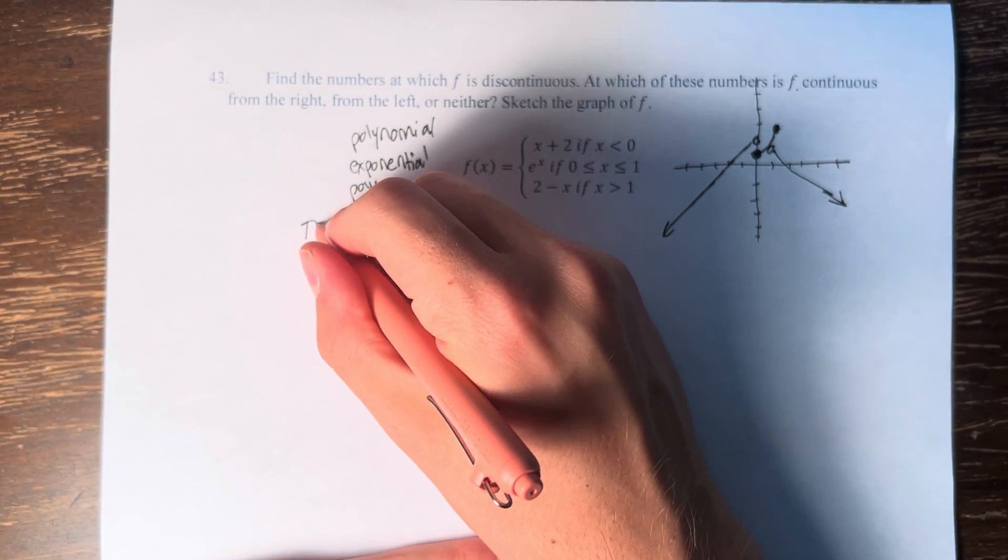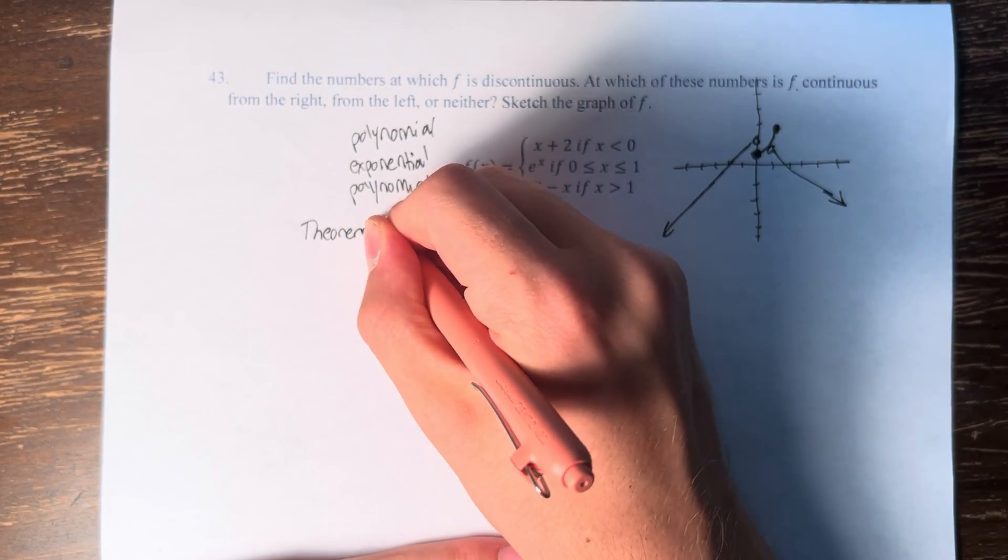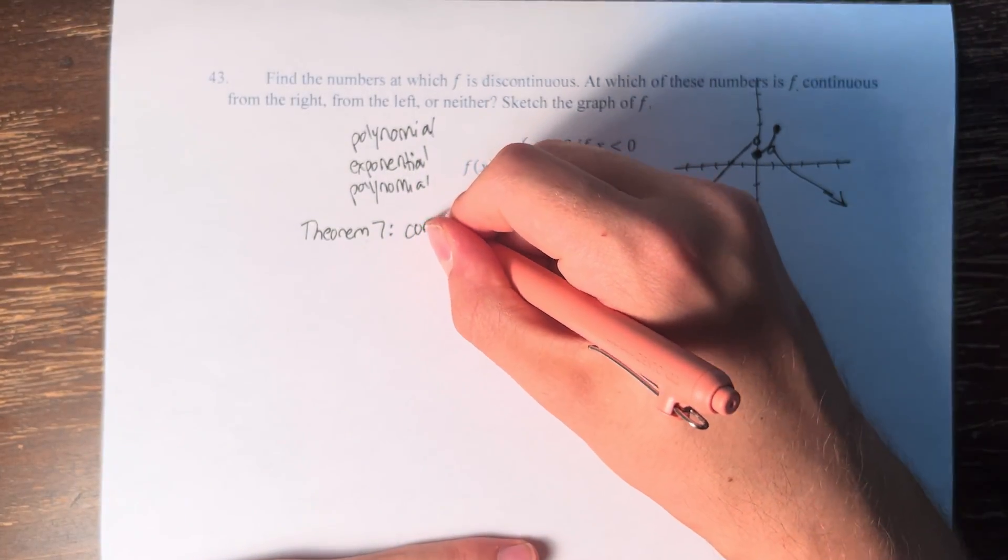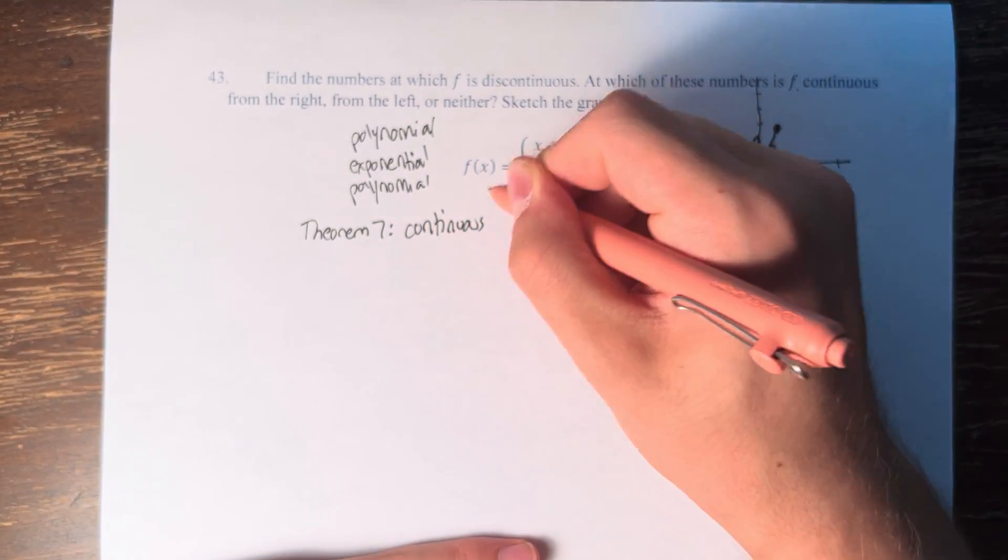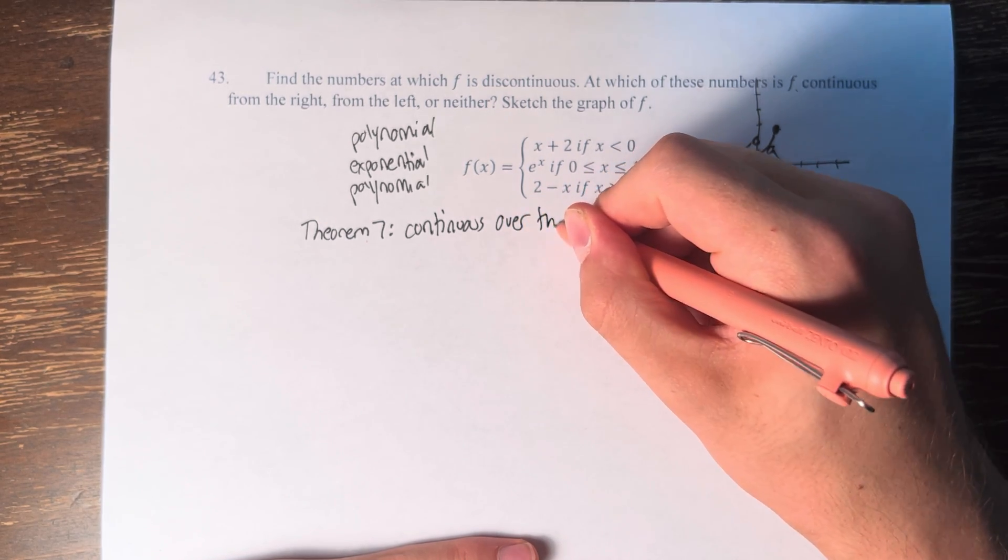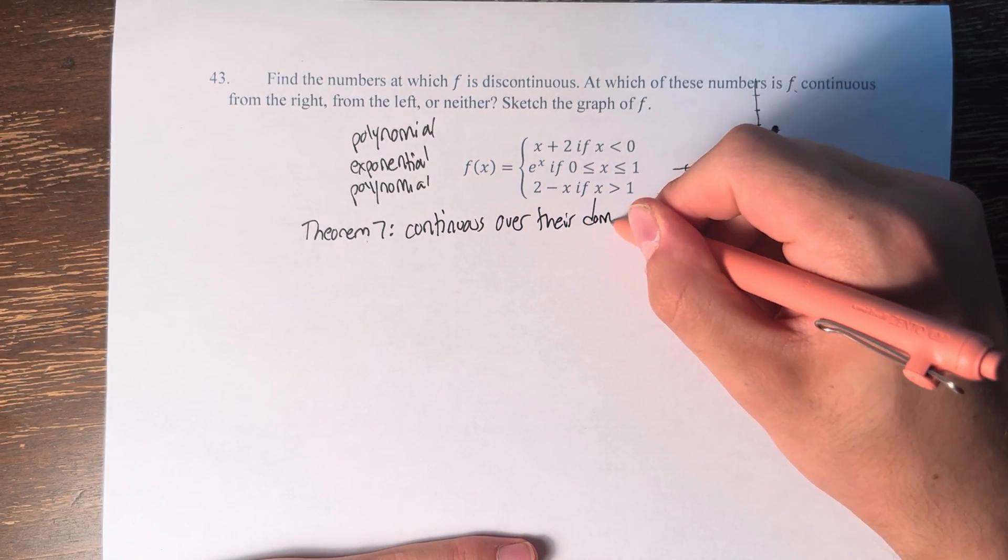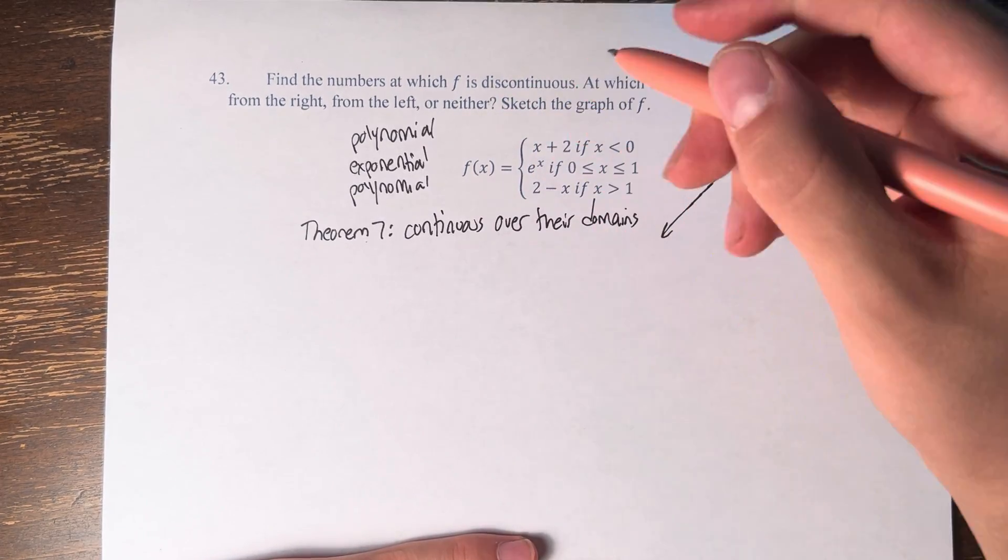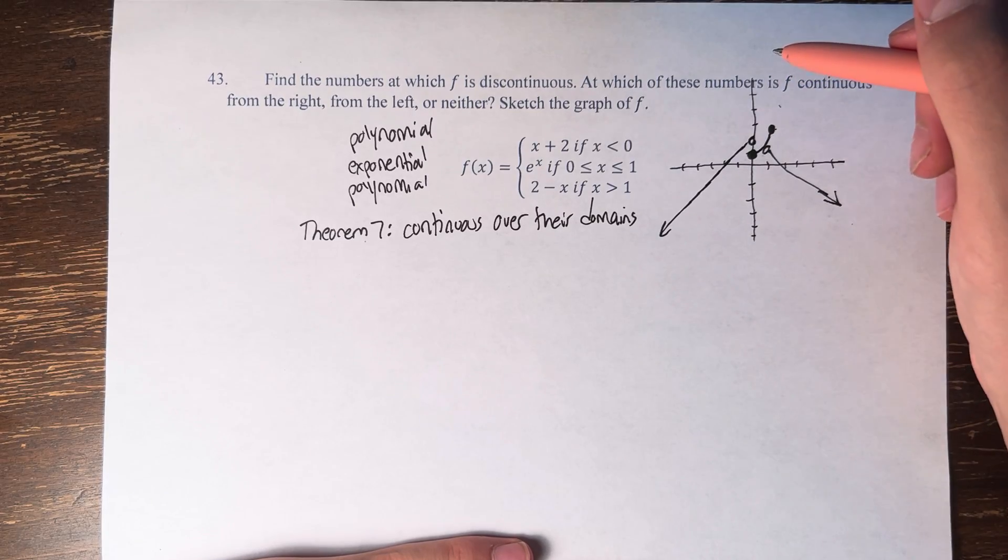And we know from theorem 7 that polynomials and exponentials, among other functions, are continuous over their domains. So that means that the only place we have to check whether this function is discontinuous is at the points where we're switching from one function to another. So that's at x is equal to 0 and x is equal to 1.